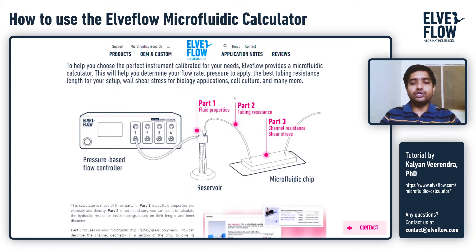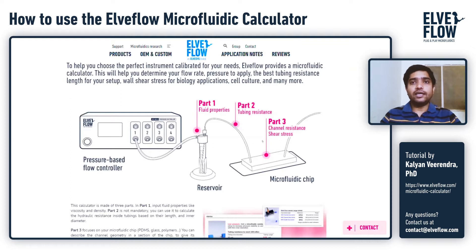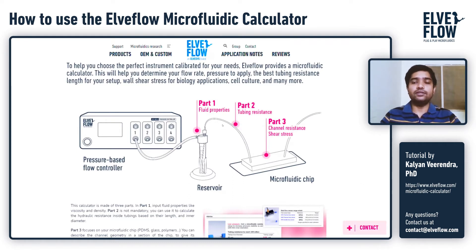The tubing used to connect the fluid reservoir to the microfluidic chip also impacts the flow parameters of your system. If you consider the fluid as electricity, all the elements it flows through — such as the tubing and microfluidic channels — can be considered like wires. Like electrical wires, channels and tubings have a certain amount of resistance to flow, commonly referred to as hydraulic resistance. It is easier to suck up liquid through a thick straw than a very thin one, and the longer the straw, the more force you need. The inner diameter and length of the tubing together determine its hydraulic resistance.